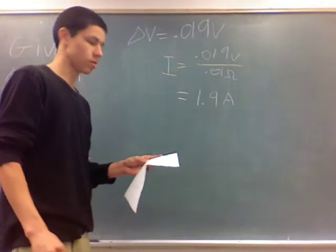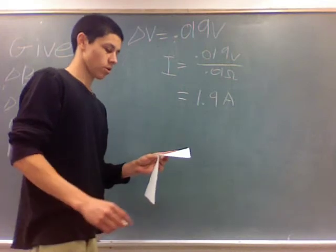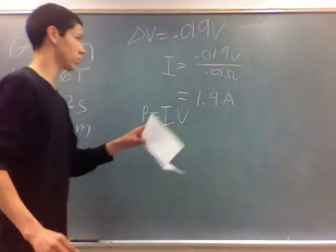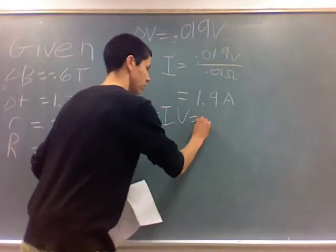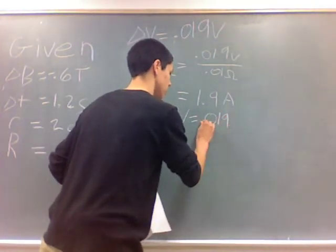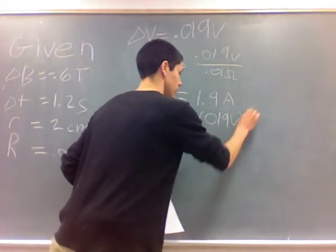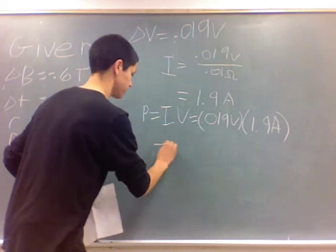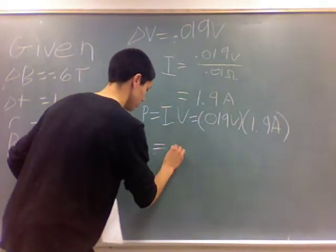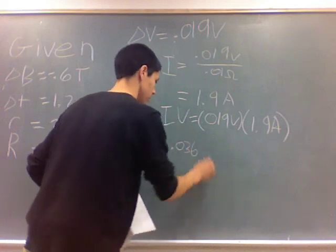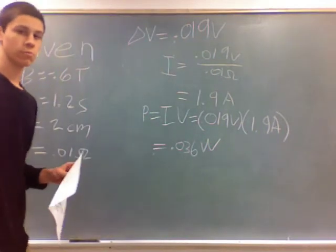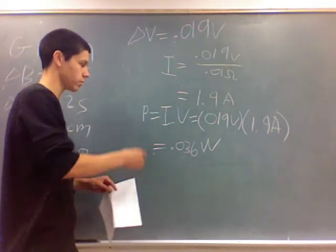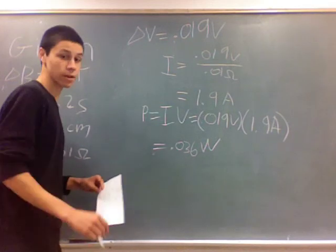Now we're trying to figure out if we generate enough power to light the LED light. We know that power equals current times voltage, so we just plug in the current and voltage that we calculated. So 0.019 volts times 1.9 amperes equals 0.036 watts of power. We knew that we only needed 0.03 watts of power, so we got enough power here to light the light bulb.